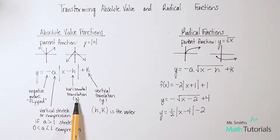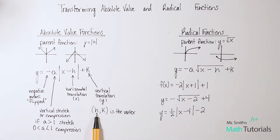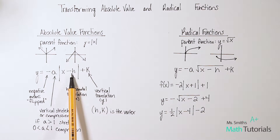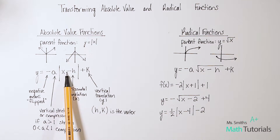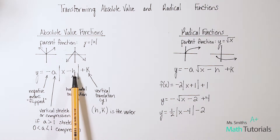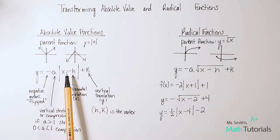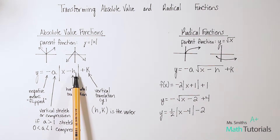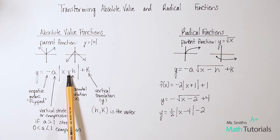The h is our horizontal translation — essentially our x value. You'll notice down here that h comma k is the vertex, and h is the x. This tells us how we're moving horizontally, left or right. What's interesting is that because of the negative in the formula, whatever h is will be the opposite: if it's minus h, the function is actually moving to the right. If it's positive h, it's moving to the left.